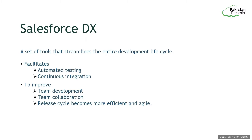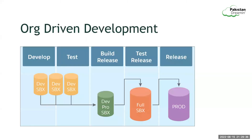Salesforce DX is primarily used by developers and allows users to have true version control. In general, the development model can be of two types: traditional org-based development or the latest scratch org-based development. Org-based development model works with orgs that don't have source tracking, such as sandboxes, developer edition orgs, or Trailhead playgrounds. With this model, you must track changes manually and deploy sets of changes to sandboxes and then to your production org. This model is mostly suitable for projects with lots of post-deployment activities or apps that have not moved to Salesforce DX.